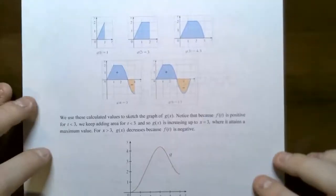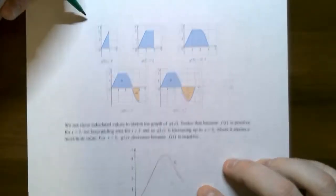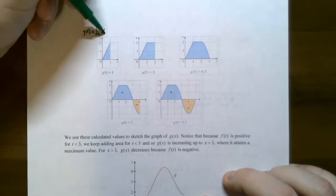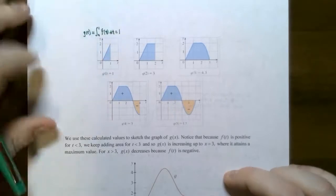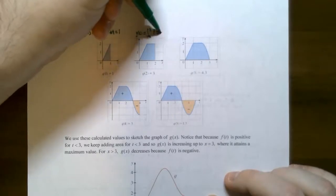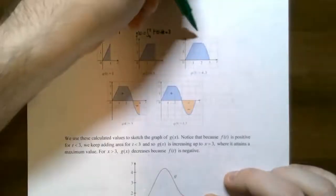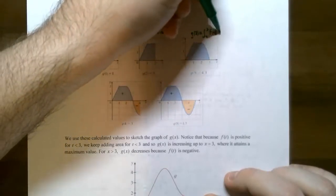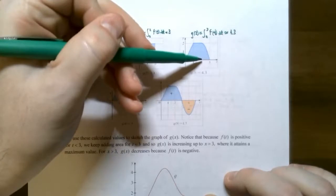We can use these calculated values to sketch a graph of g of x. The top-left graph shows g of one as the area from zero to one of f of t dt — the triangle with area one. g of two is the integral from zero to two, the sum of the triangle and rectangle areas, giving three. g of three is approximately 4.3 because the upper boundary from t equals two to t equals three was a curve.